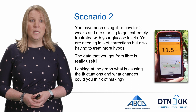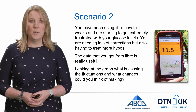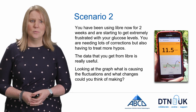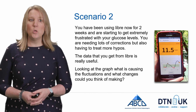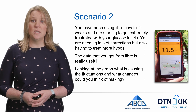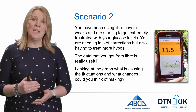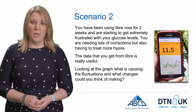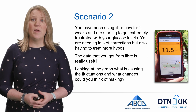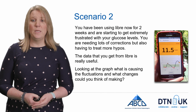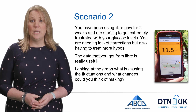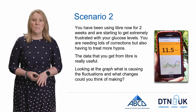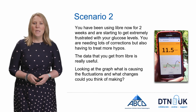Scenario two: you've been using the Libra for two weeks and are getting extremely frustrated with your blood glucose levels. You need lots of corrections but are also having to treat more hypos. The data from the Libra is really useful — looking at the graph, what is causing the fluctuations and what changes could you make? This is a common scenario where new Libra users find themselves chasing their blood glucose levels. What tests could you do to see if insulin is working? Would you consider a fasting test? Are your corrections bringing you down too much, or are you frequently correcting upward with carbohydrate? Going through the DTN modules will help you answer these scenarios.